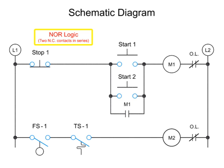NOR logic, an extension of NOT logic, operates by the inclusion of a second, normally closed push button in series. In this arrangement, pushing stop button 1 or stop button 2, the M1 coil is shut off and the M1 holding contact is deactivated.